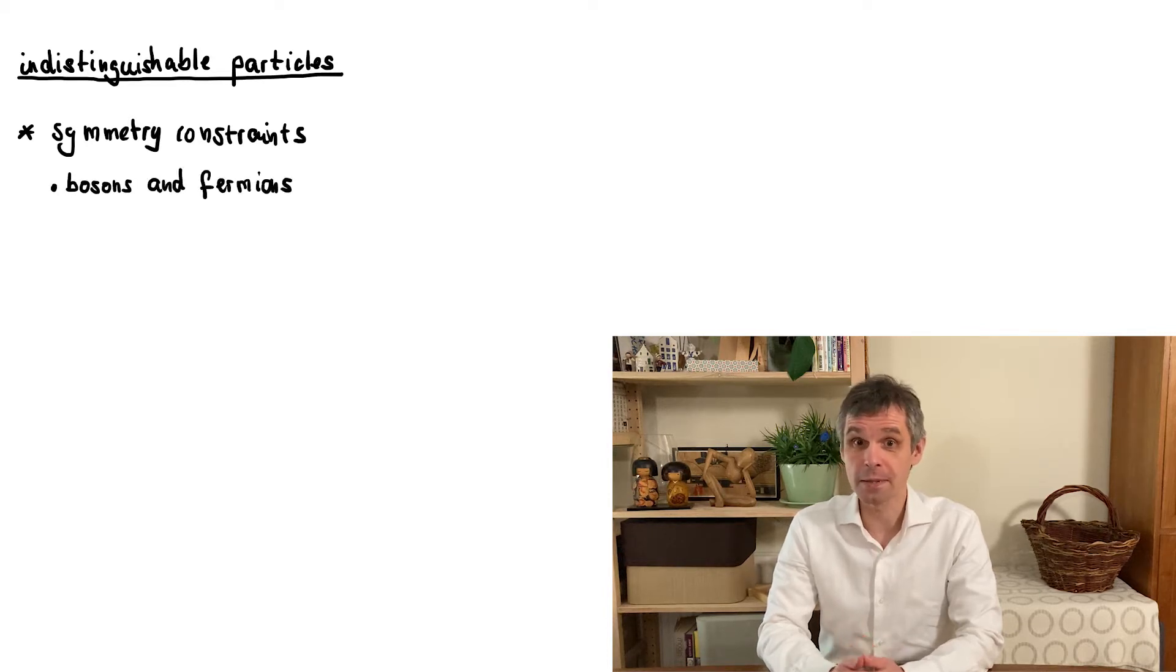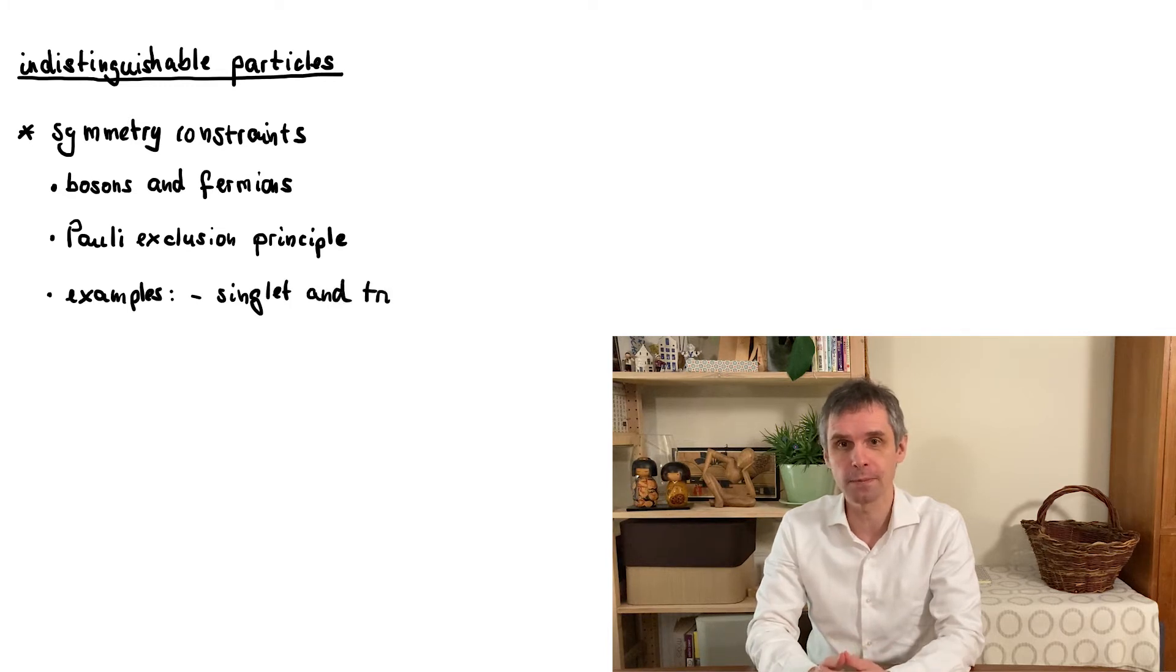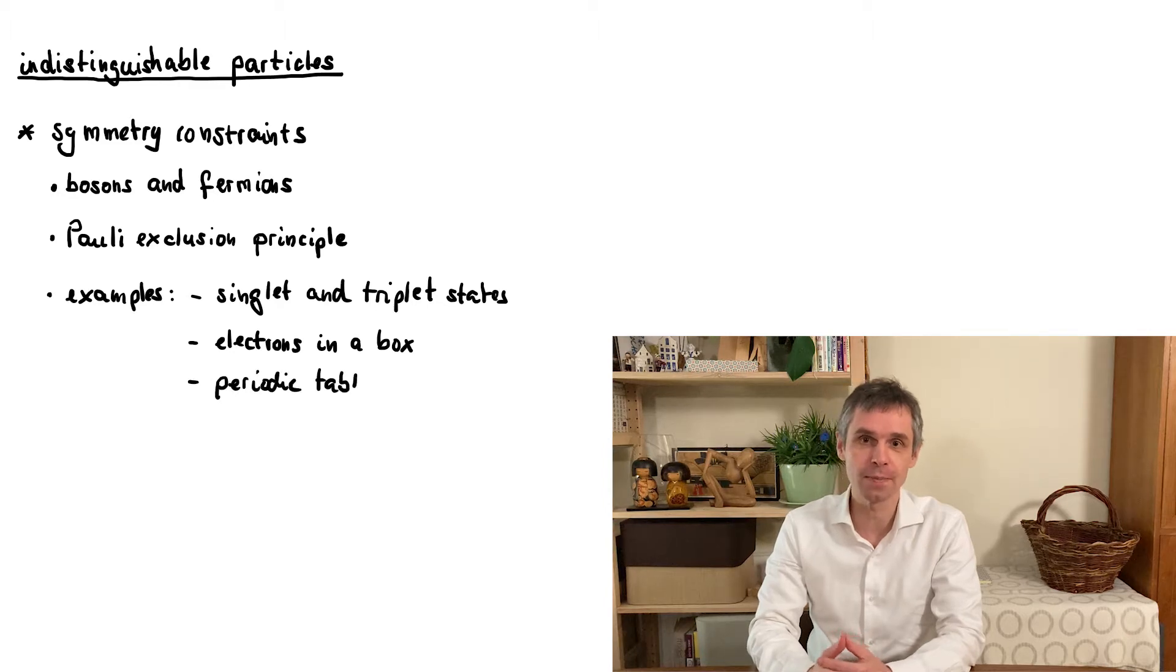For fermions, the consequences of these symmetry constraints are most obvious as they lead to Pauli's exclusion principle. This powerful principle applies for instance to electrons, as we will illustrate on several levels. What it means for the combined states of such particles when we inspect their orbital and spin degrees of freedom, how this manifests itself for instance when we let these particles populate the states in a box...